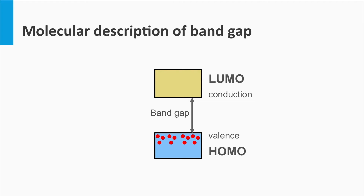Physicists, in general, use the terms valence band, conduction band and band gap. Chemists might use different terms for the same concepts. They might use the expression highest occupied molecular orbital — the HOMO — as the valence band, and the lowest unoccupied molecular orbital — the LUMO — as the conduction band. The HOMO-LUMO gap would be the band gap.